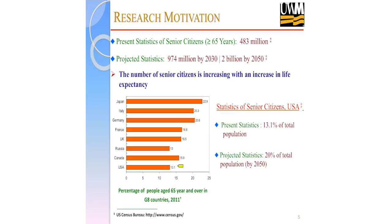This is the statistics of world population right now. Senior citizens now number over 483 million, and that is projected to rise to over 974 million by 2030. You can see the percentage of elderly people keeps increasing — the US is now 13.1 percent of total population, and it is projected to go up to 20 percent by 2050. This is a good sign because life expectancy is increasing due to advancement in science, medication, and other things.